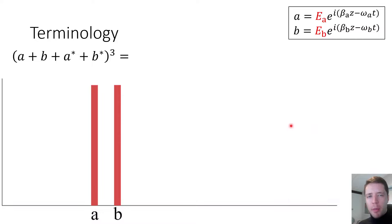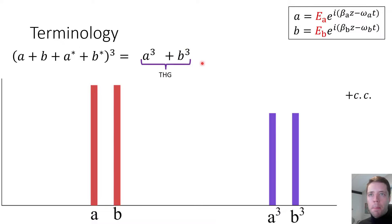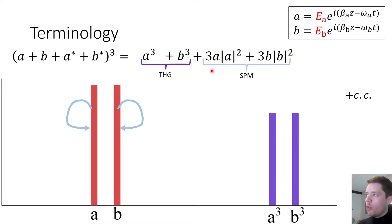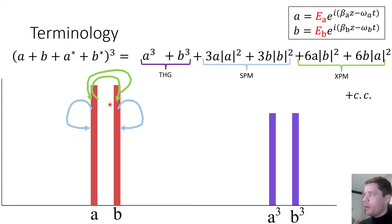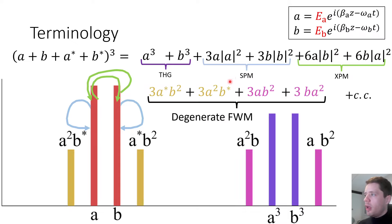A bit of terminology: inserting two frequency components into the expression for the cube of the E field, we get terms oscillating at three times the input frequency — that's third harmonic generation. We also get terms oscillating at one of the original frequencies but with strengths depending on the power of the other field. If it's a field's own power affecting itself, that's self-phase modulation; if it's another field's power, that's cross-phase modulation. Any remaining terms are labeled as four-wave mixing.